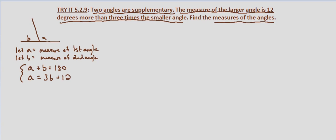So with this, since we've already solved for a in our second equation, we're going to use substitution. So substitute what a is in the second equation into the first equation in terms of b. So 3b plus 12 plus b equals 180.